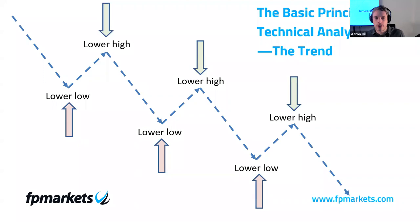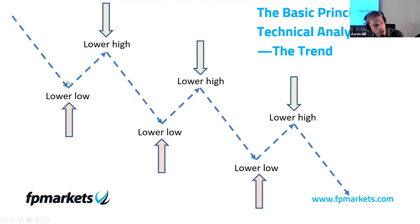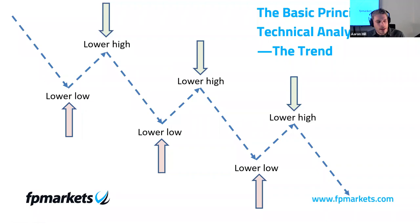Newer traders get caught up in the maze of local swings within a clear move. The primary trend is the long-term trend — this is something I've taken from Dow theory. The secondary trend is the corrections, and the minor fluctuations are the small local variations. What happens is newer traders unfortunately get caught up in these minor variations and do not take the bigger picture into consideration. Hence why multi-time frame analysis is very key to understanding where you are in the overall picture.